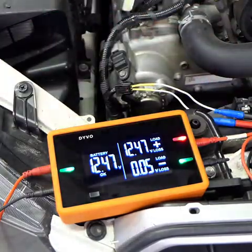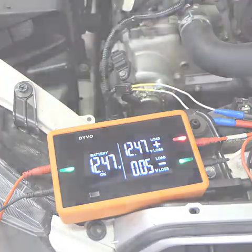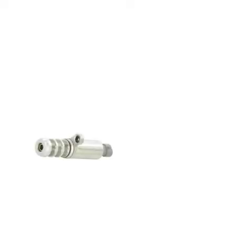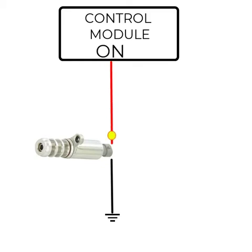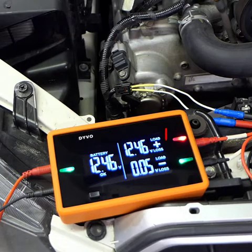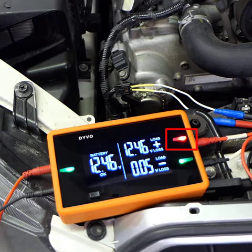The way that this cam actuator works is that it is given a ground all the time, and then the computer controls the cam actuator by pulsing it. So it's a pulse width modulated signal and it's going to change that signal — it's going to pulse it just like a fuel injector. Right now the vehicle is off, so the cam actuator is off and the computer isn't controlling it. That's why we get a red LED for our circuit positive.